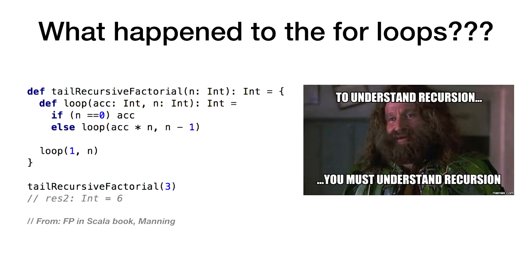The next thing, also very obvious to FP beginners, is recursion — where did all the for loops go? The problem I had with recursion was writing it. I could understand it, I could read it, but writing recursion is different. When you look at blog posts or books, recursion examples are mathematical — factorial or Fibonacci series. That makes sense. But when you're looking at a real-world application and want to use recursion, that's where I usually get stuck.